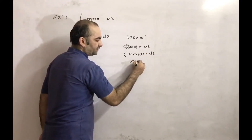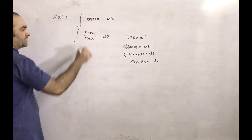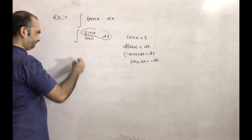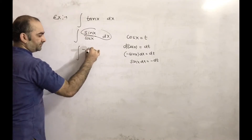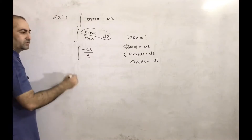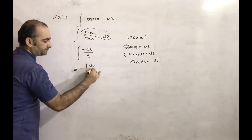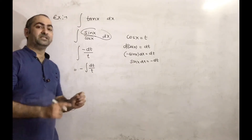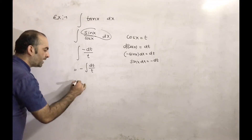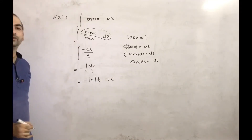From this, sin x into dx equals minus dt. So in the integral, sin x dx becomes minus dt and cos x becomes t. Taking minus common, we get minus integration of dt divided by t. This integration is the same as integration of dx divided by x, giving minus ln|t| + c.